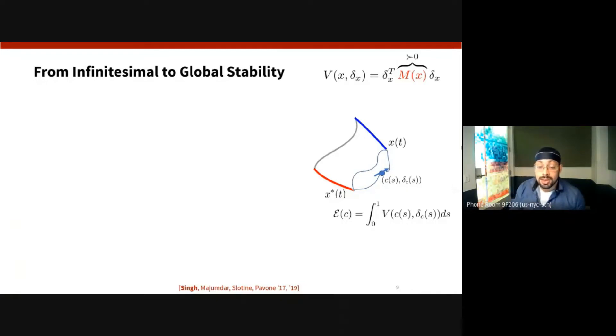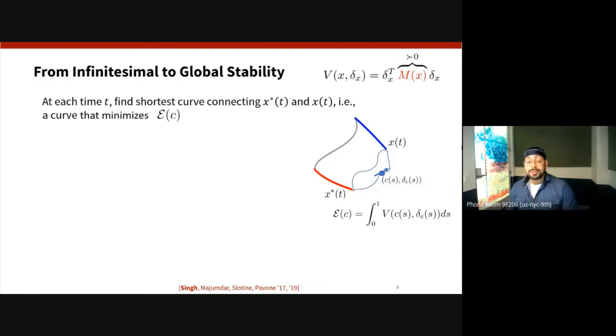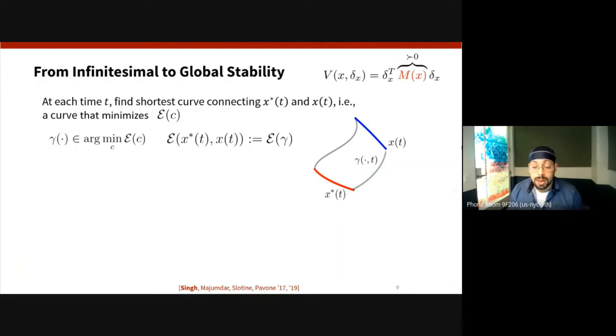In this case, simply the integral of our positive definite function V. And at every point in time we want to find the shortest curve that connects x*(t) and x(t), namely the curve that minimizes this energy quantity. This curve will simply be the minimizing geodesic which in some cases can be shown to be unique, and its energy we will term as the Riemannian energy.